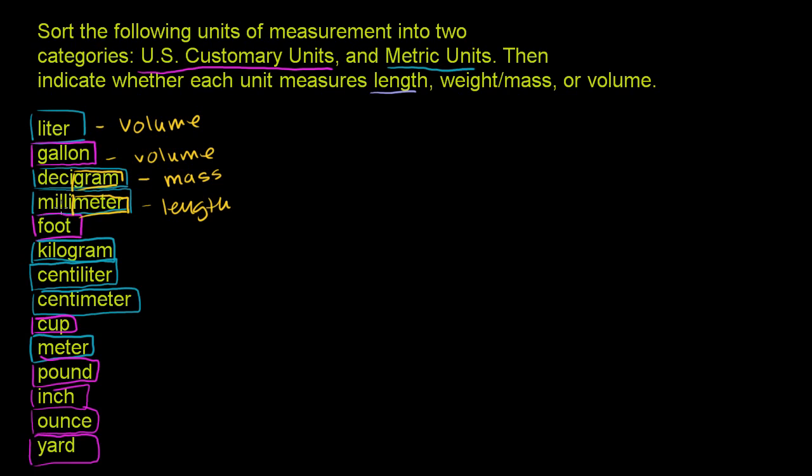Millimeter, milli means one-thousandth of a meter. Foot, that is also a unit of length. Kilogram, that just means 1,000 grams. Kilo means 1,000. Gram, we already said, is a unit of mass.